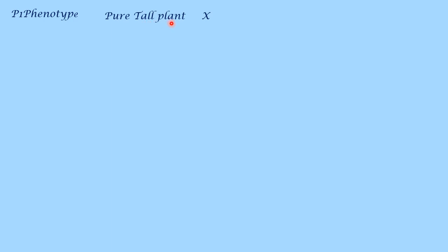Let us solve the example. Here two parents are given: one is a pure tall plant and the second is a pure dwarf plant. P1 stands for first parental generation, and phenotype refers to the character which we see externally. When you see a plant, the plant can be tall or dwarf. This character is represented by a pair of genes.